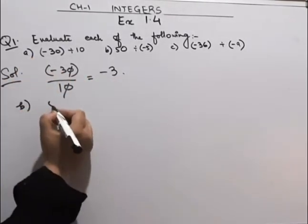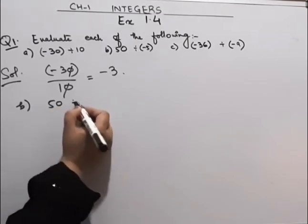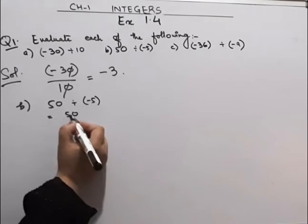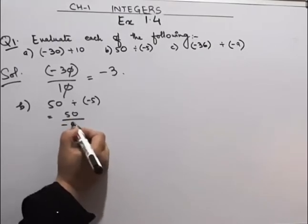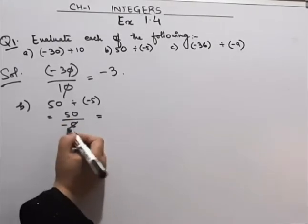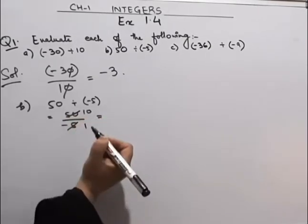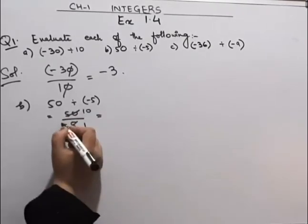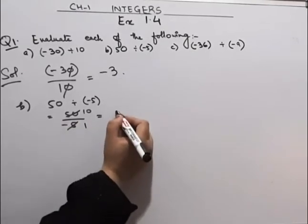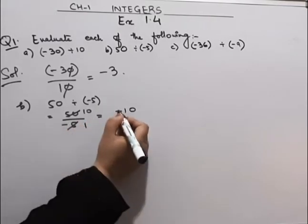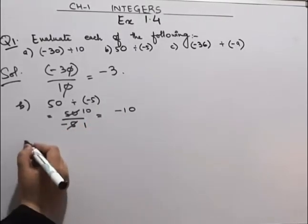Now coming to the B part. It is 50 divided by minus 5. In the table of 5, 5 tens are 50. This minus sign will come up, so the answer will be minus 10.